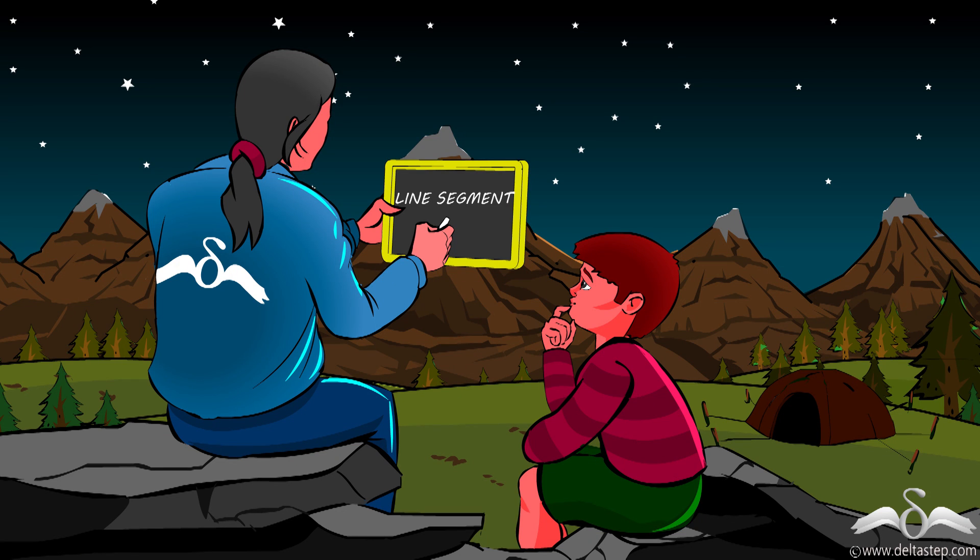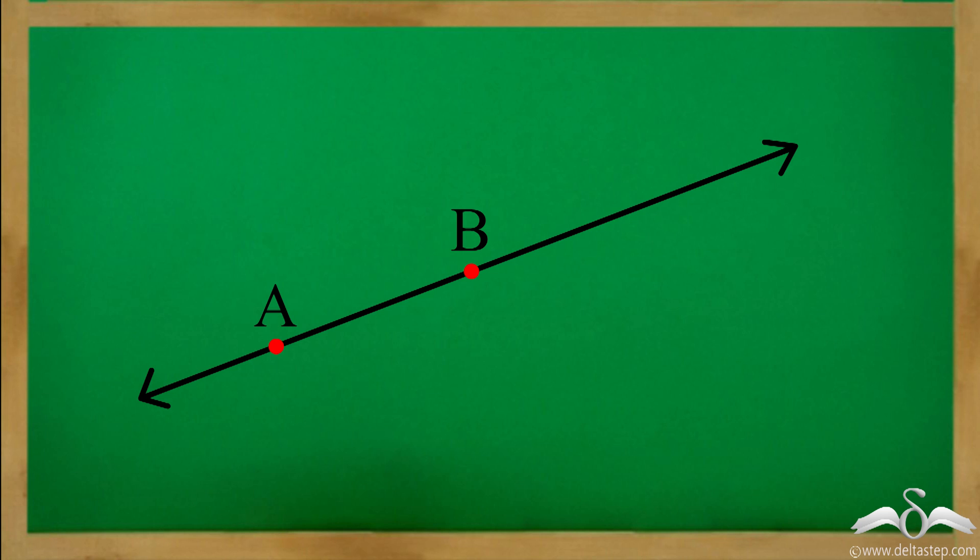So, if I join any two of these stars which are like two points, will that be a line? No, that would be a line segment. Line segment? What is this now?